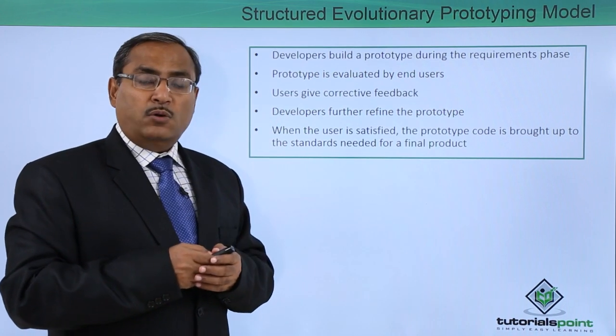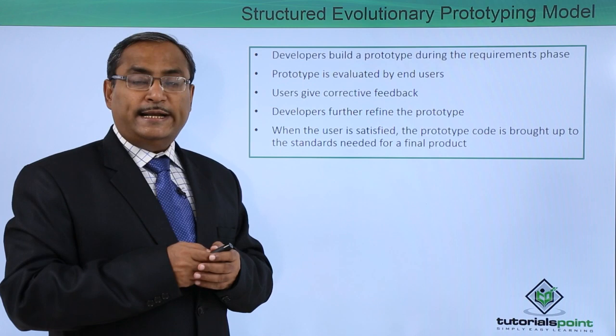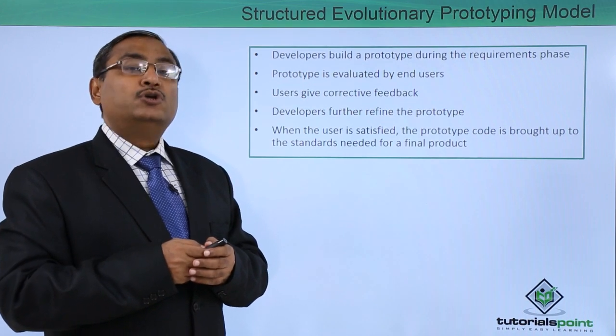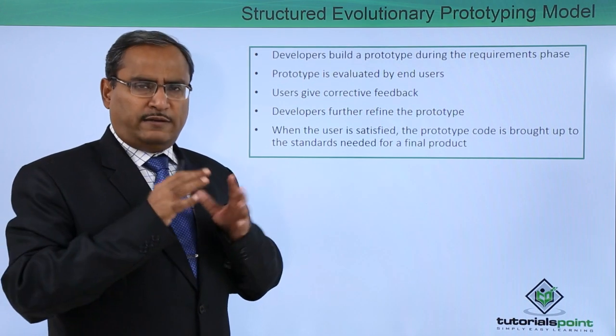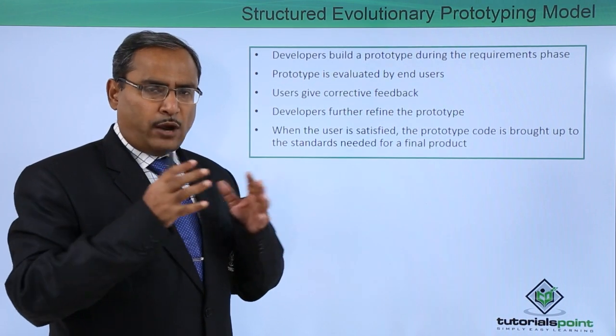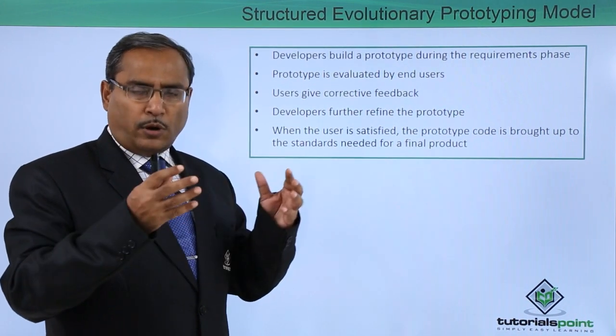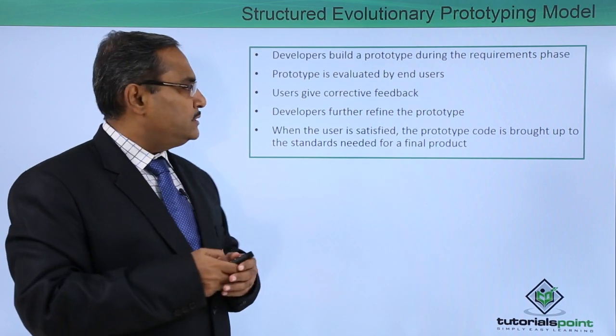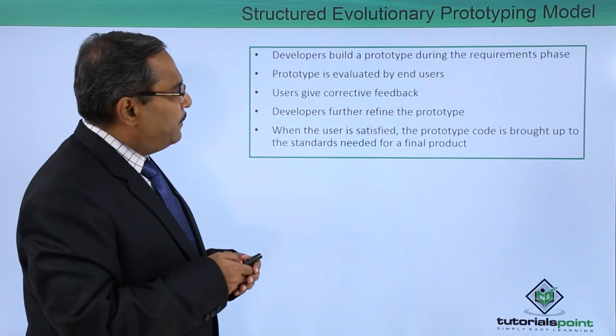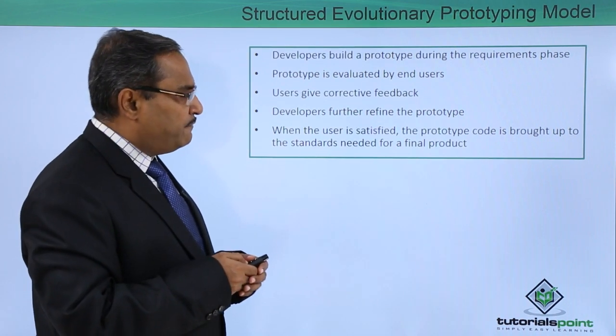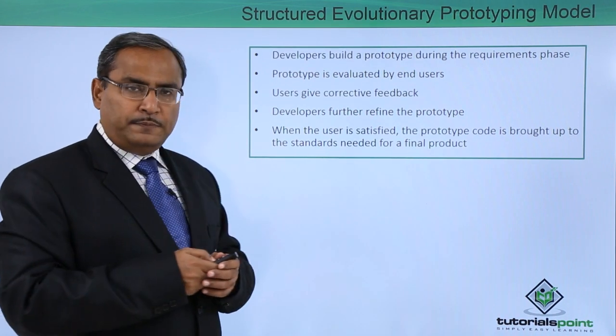Users give corrective feedback — what they wanted, what they did not get in the prototype. All the corrective feedbacks will be accumulated and obtained from the users. Developers then further refine the prototype.